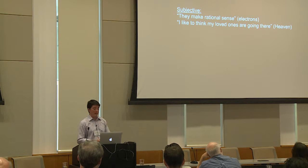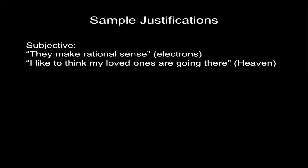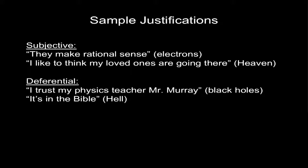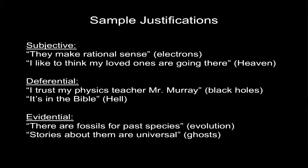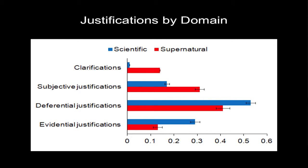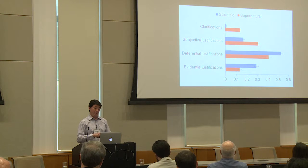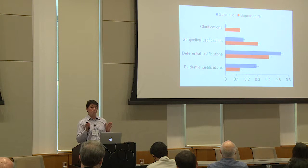Here are some sample justifications in each category. Subjective: 'I believe in electrons because they make rational sense,' or 'I believe in heaven because I like to think my loved ones are going there.' Deferential: 'I believe in black holes because I trust my physics teacher, Mr. Murray,' or 'I believe in hell because it's in the Bible.' Evidential: 'I believe in evolution because there are fossils for past species,' or 'I believe in ghosts because the stories about them are universal.' Visually, the distributions are quite similar — the most common form of justification in both domains was a deferential justification. Participants did provide more evidential justifications for their scientific beliefs than supernatural beliefs, but the difference was small — about a 10% difference.